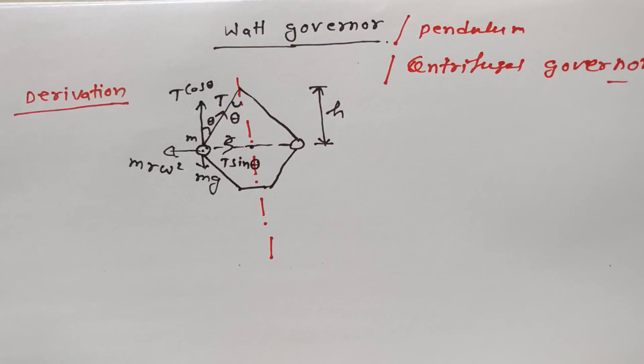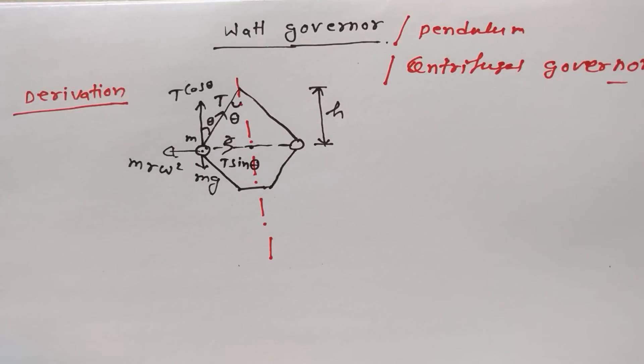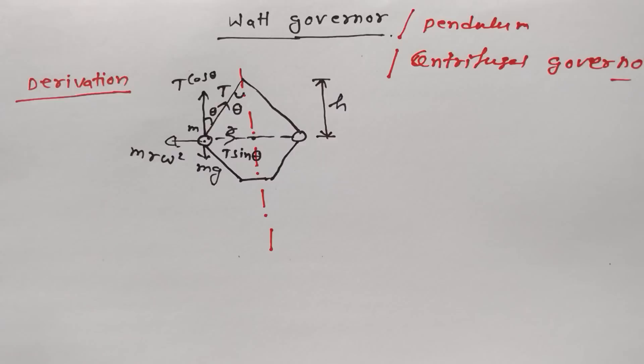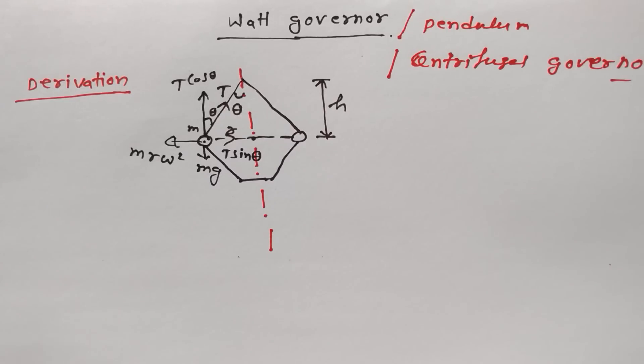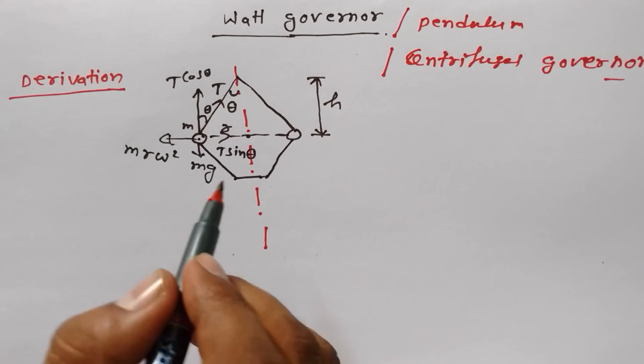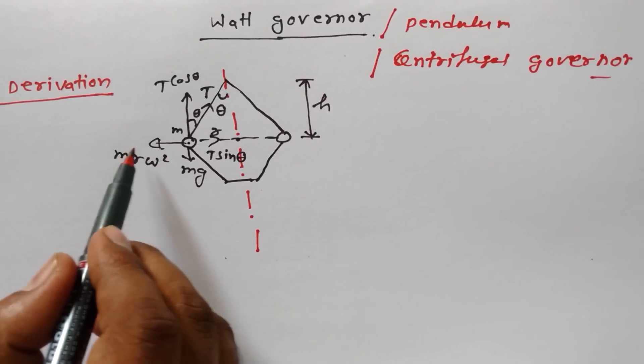If you can memorize or understand or even grab the diagram of Watt Governor, then the derivation is simple, quite easy. Let me make you understand and help you do this equation quite easily. First of all, if this is stable, then how much force is acting this side, then definitely that much force is acting that side.